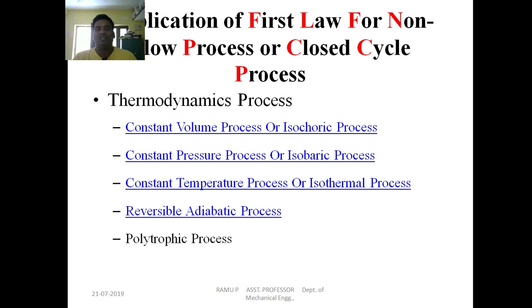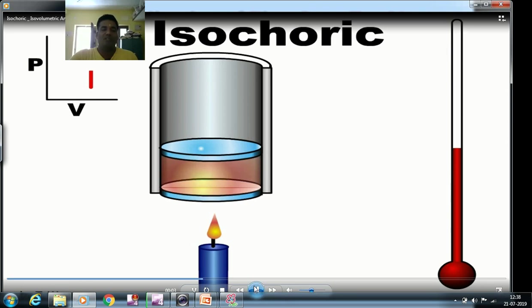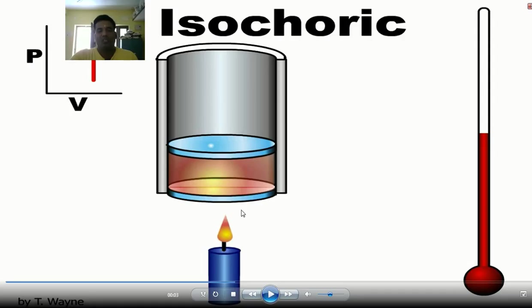For the application of the first law to non-flow (closed cycle) processes, there are five types: constant volume (isochoric), constant pressure (isobaric), constant temperature (isothermal), reversible adiabatic, and polytropic. In the constant volume or isochoric process, the volume remains constant. When gas inside the piston is heated, temperature rises, which causes pressure to rise, while volume stays constant. This is the isochoric process.